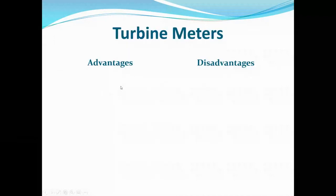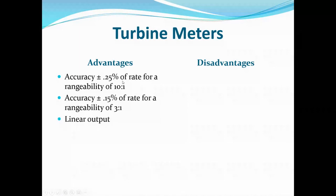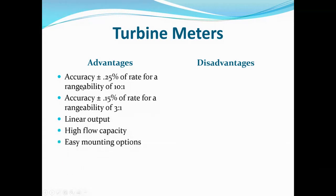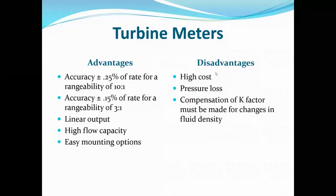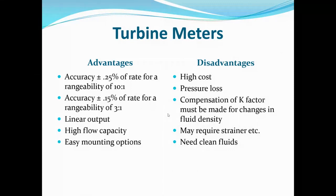Advantages of turbine meters: accuracy of about 0.25%, rangeability of about 10-to-1, linear output, high flow capacity, and easy mounting with many styles available. Disadvantages: they are expensive — a half-inch unit can be $600-$800. High pressure loss because they impede the flow stream. K-factor compensation must be made for changes in fluid density or wear. Strainers may be required due to the need for clean fluids.